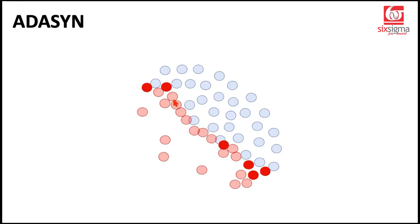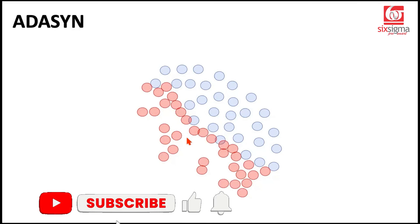It doesn't mean that it completely discards the easier to classify observations. It does create some synthetic observations around these as well. But as I said, it gives a relatively higher weightage to those observations which are difficult to classify. And then finally, we've achieved a decent amount of oversampling where the observations of the red class in terms of counts are comparable to the blue class.